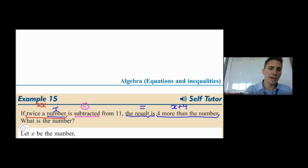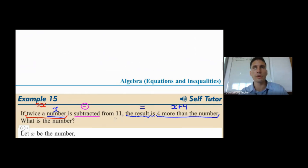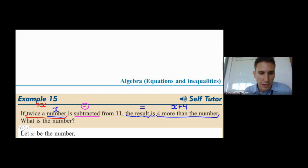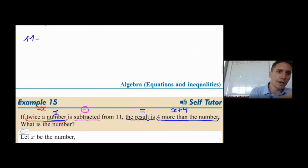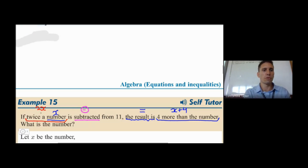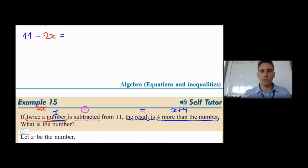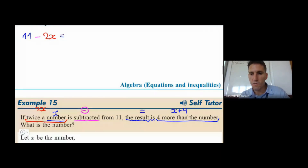Now the annoying thing about English: we say '2x is subtracted from 11', which means 11 minus 2x — it's backwards and confusing. So we have 11 minus 2x equals x plus 4. That's our equation, and we need to find x.